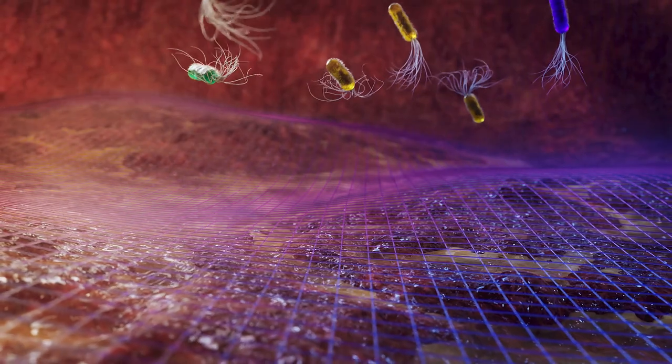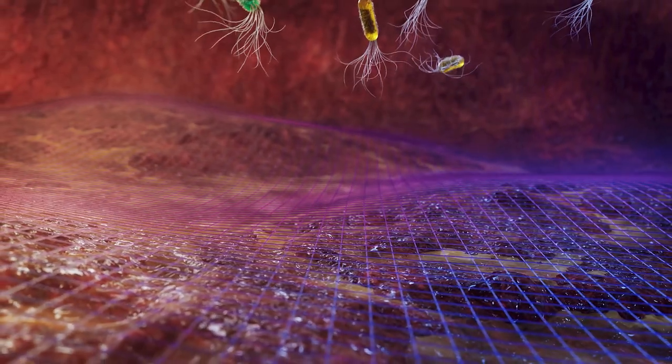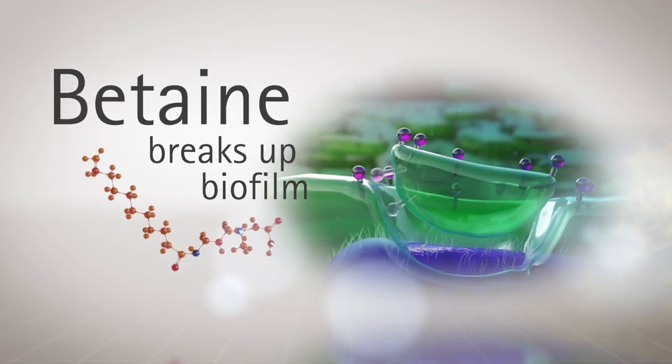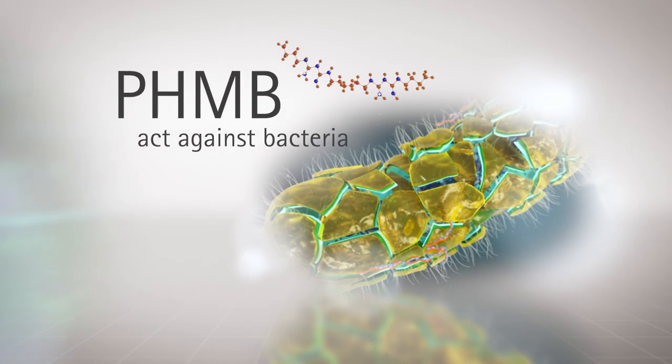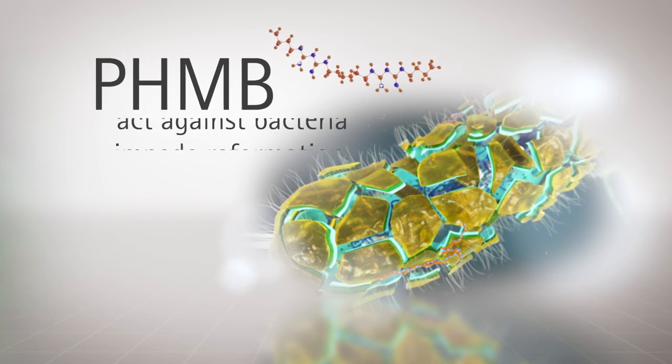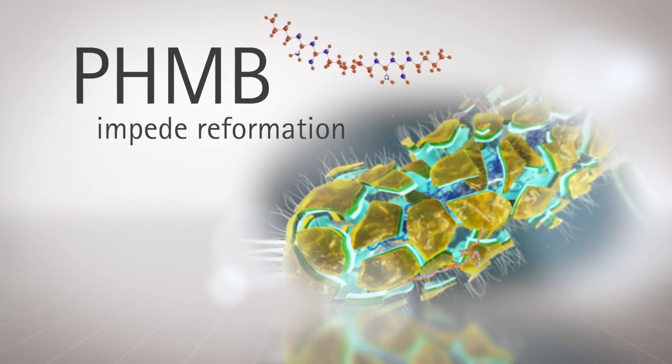No bacteria, no pathogenic biofilm. In summary, betaine breaks up biofilm and opens the door for polyhexanide to act against bacteria and to interfere with the reformation of biofilm.